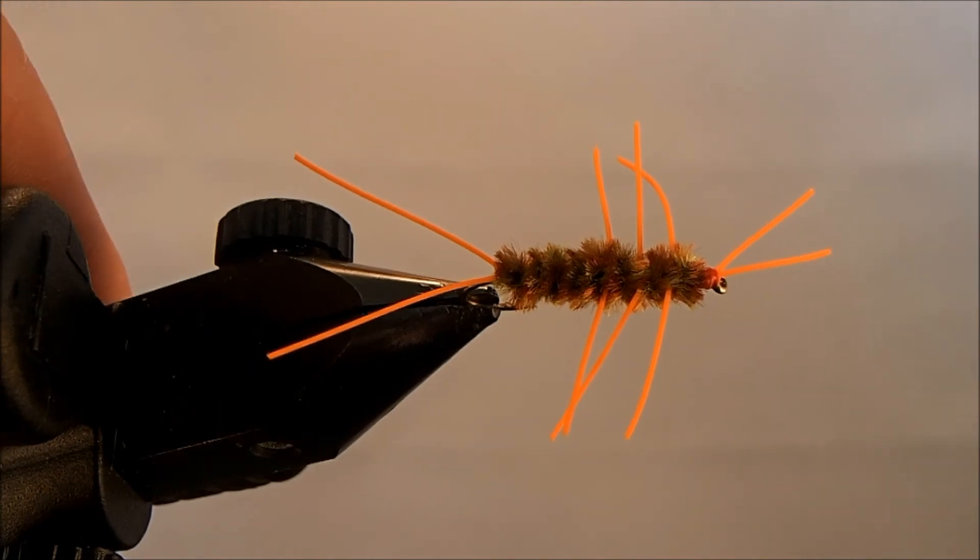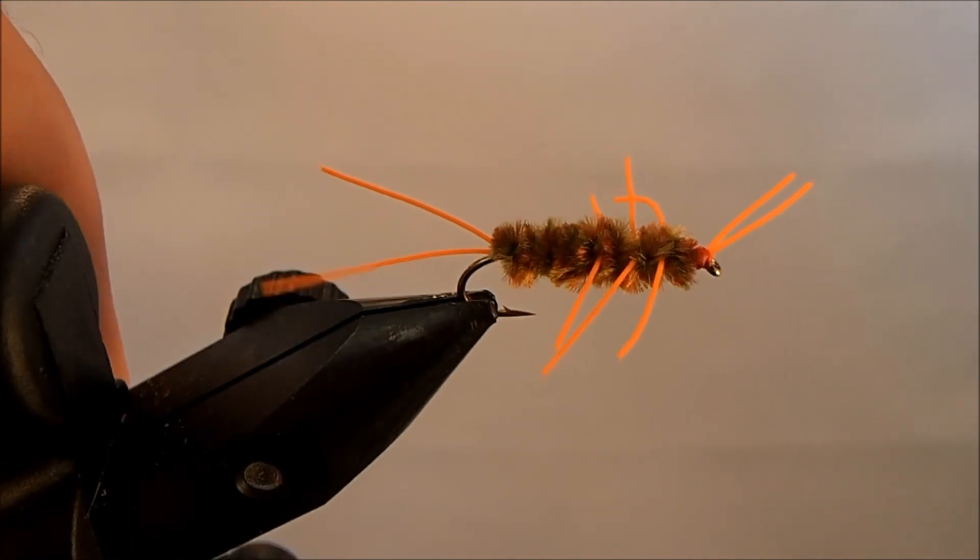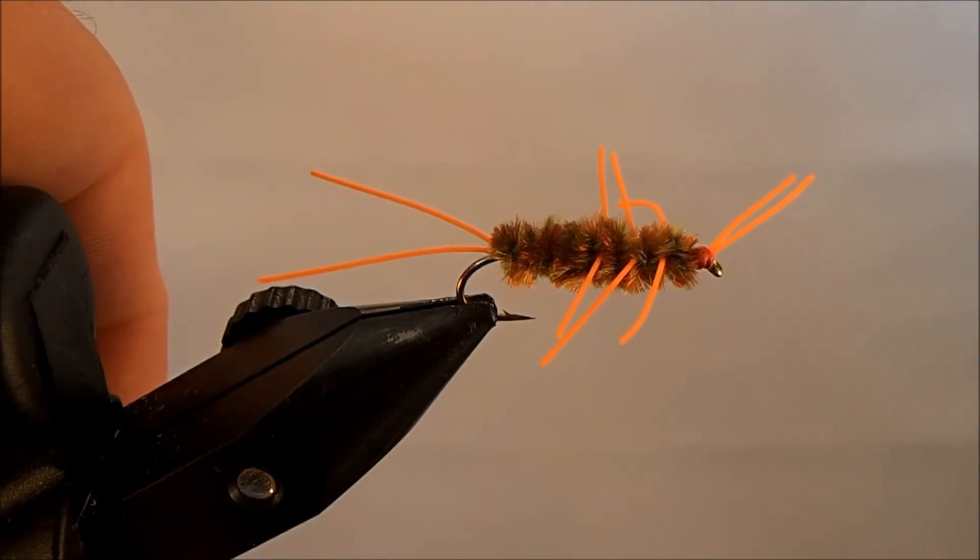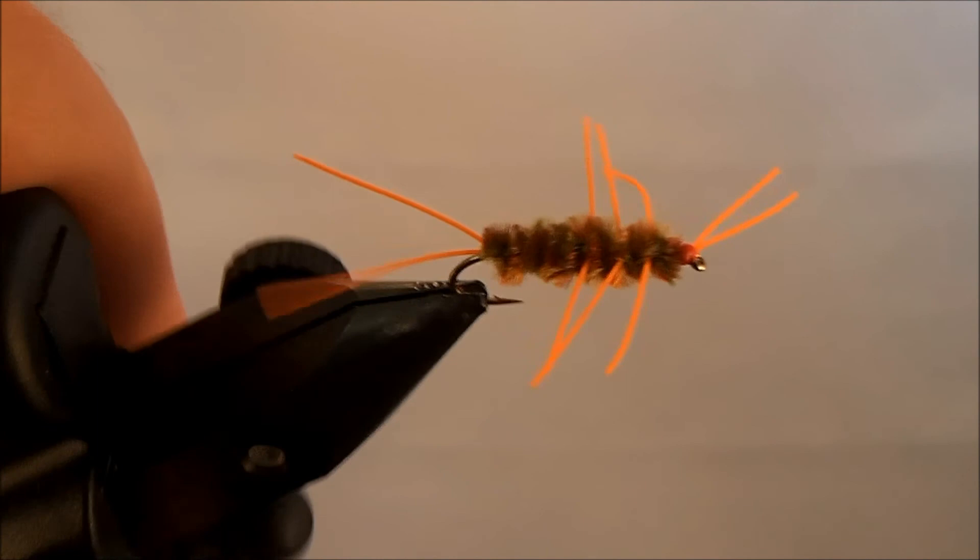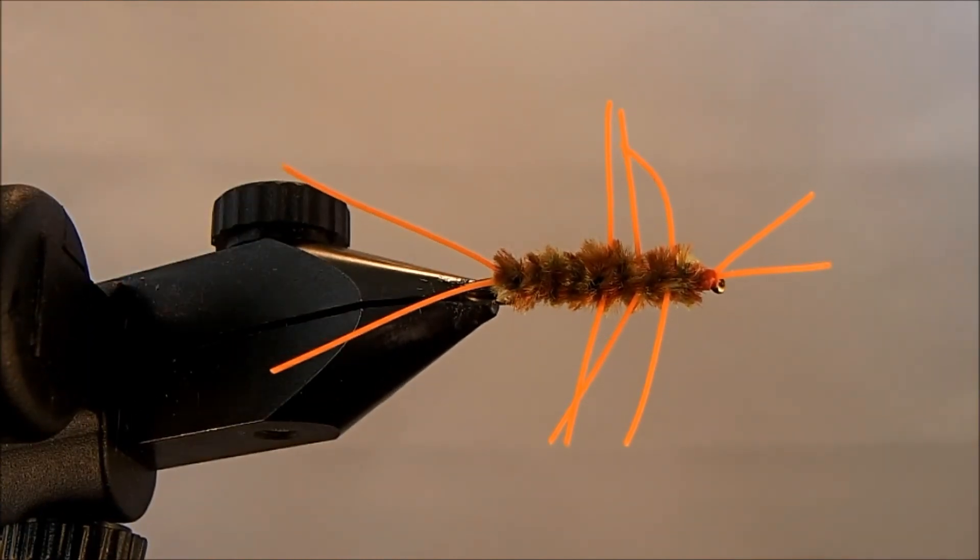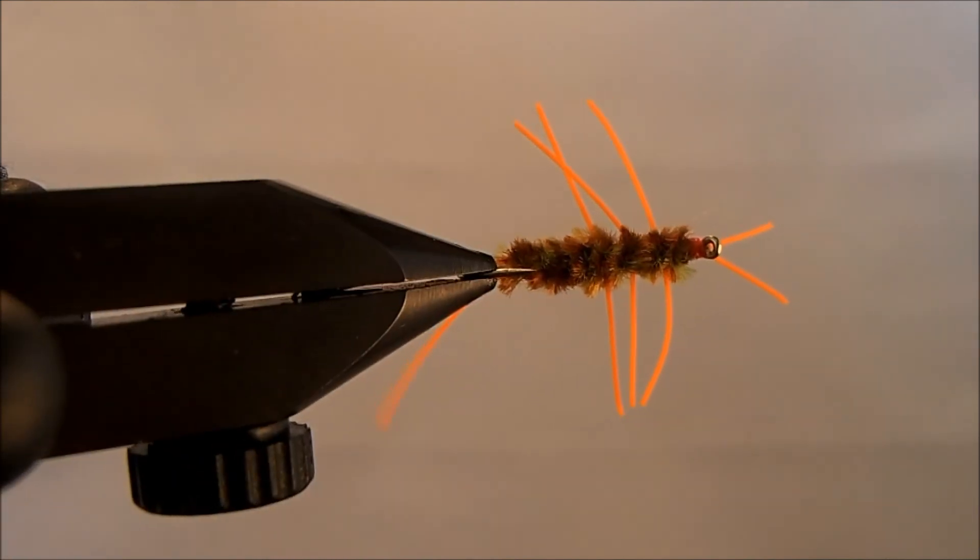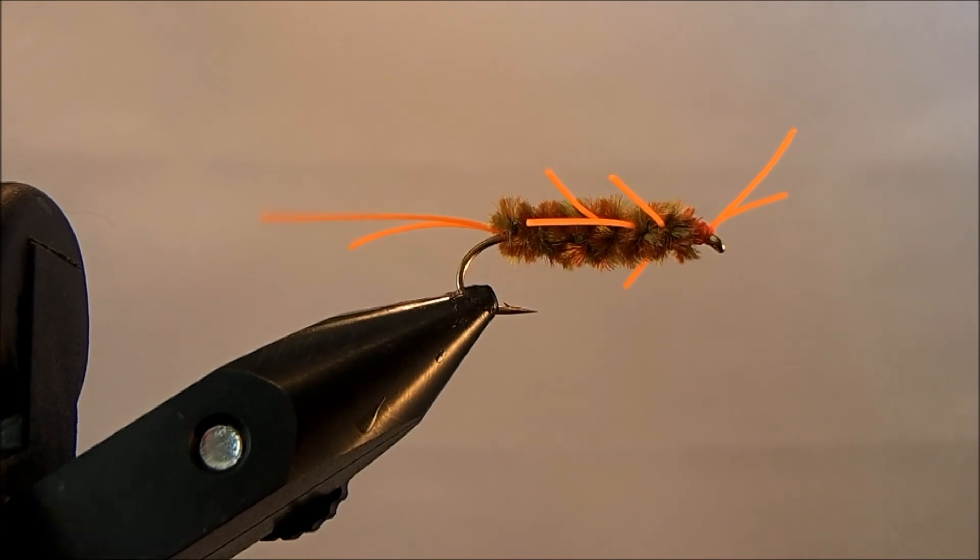You can tie these in all sorts of different colors. If you don't have the variegated look and you want to add some different shades, you can use a Sharpie as well and that'll start to darken some of the areas there. But that's it. That's my rust and olive variegated rubber leg stone.